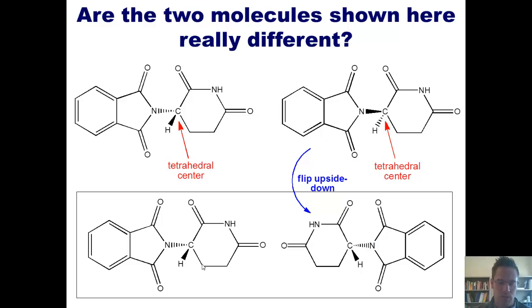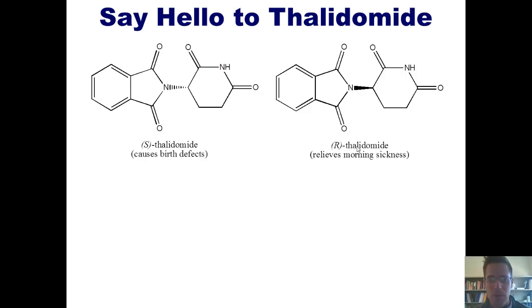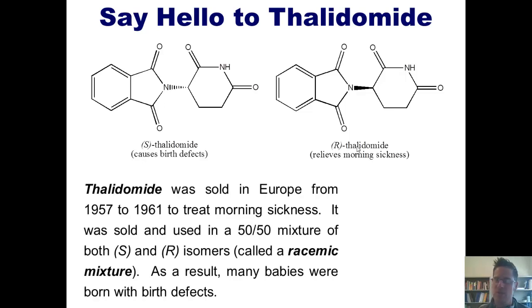Now, why would I have picked these odd-looking structures to show you? The reason is because these particular molecules actually have a name and a story. Say hello to thalidomide. The enantiomer shown at the left is called S-thalidomide, and the enantiomer shown to the right is called R-thalidomide. S-thalidomide causes birth defects, while R-thalidomide relieves morning sickness in pregnant women. As it turns out, thalidomide was sold in Europe from 1957 to 1961 to treat morning sickness in pregnant women. Sadly, it was sold and used as a 50-50 mixture of both S and R enantiomers — that type of mixture is called a racemic mixture.